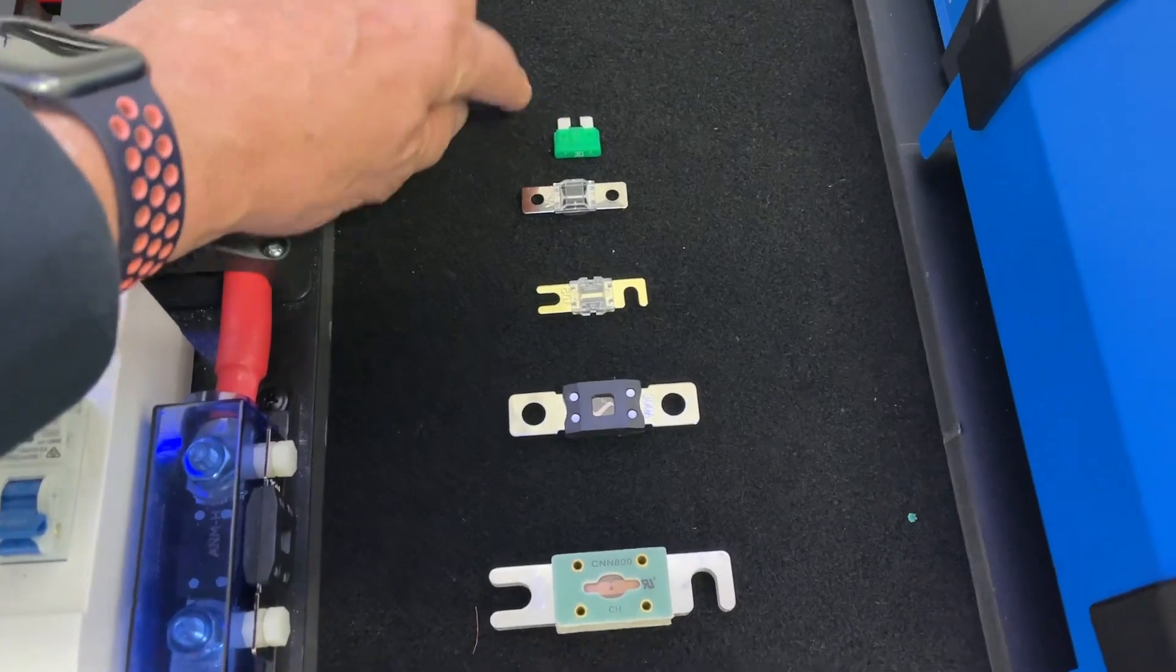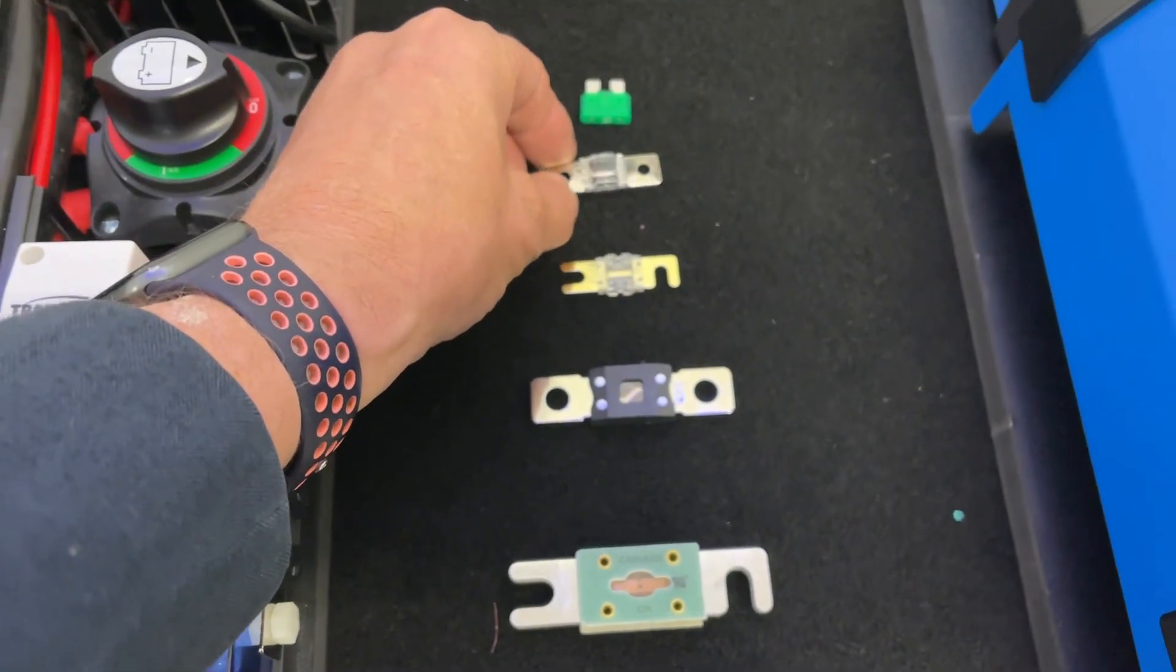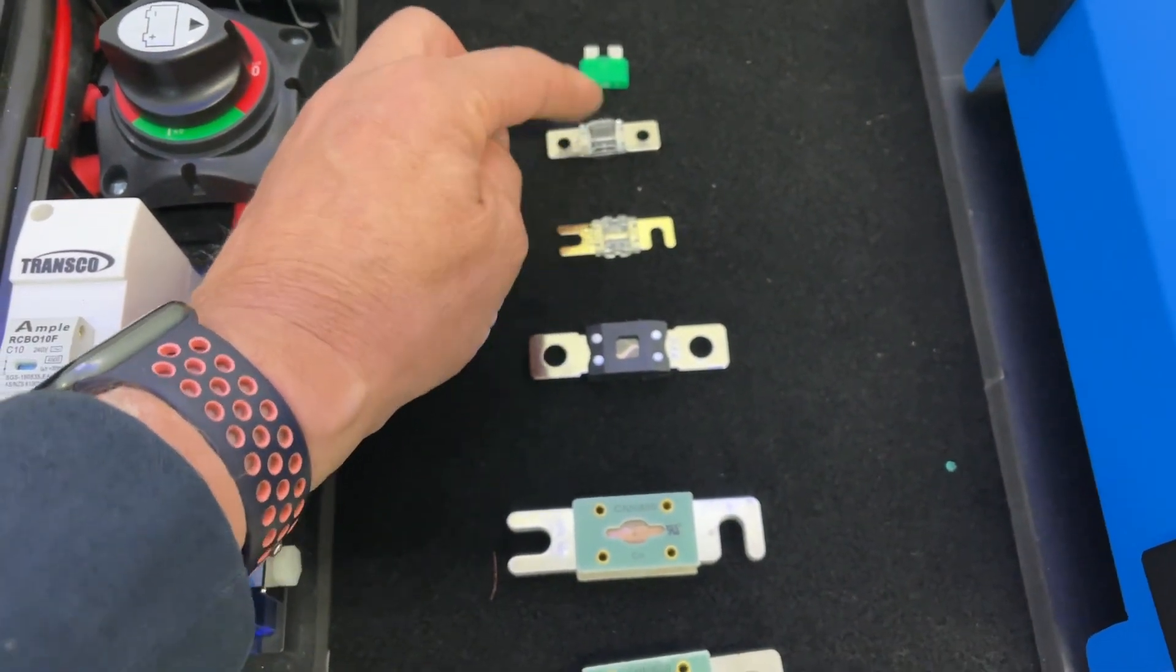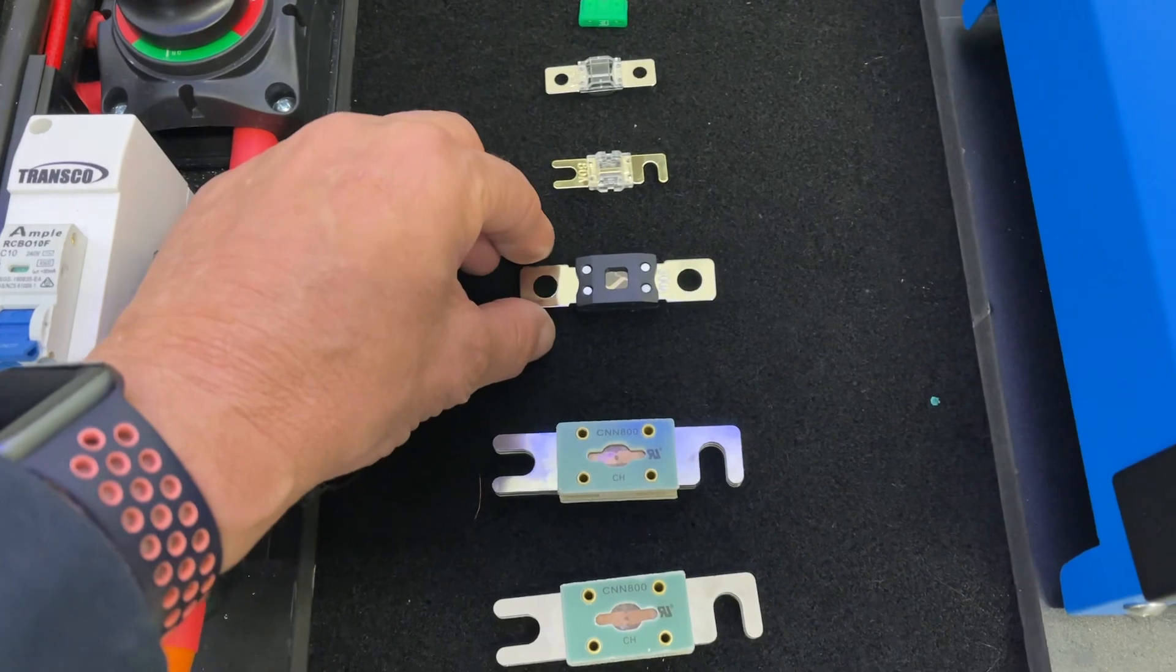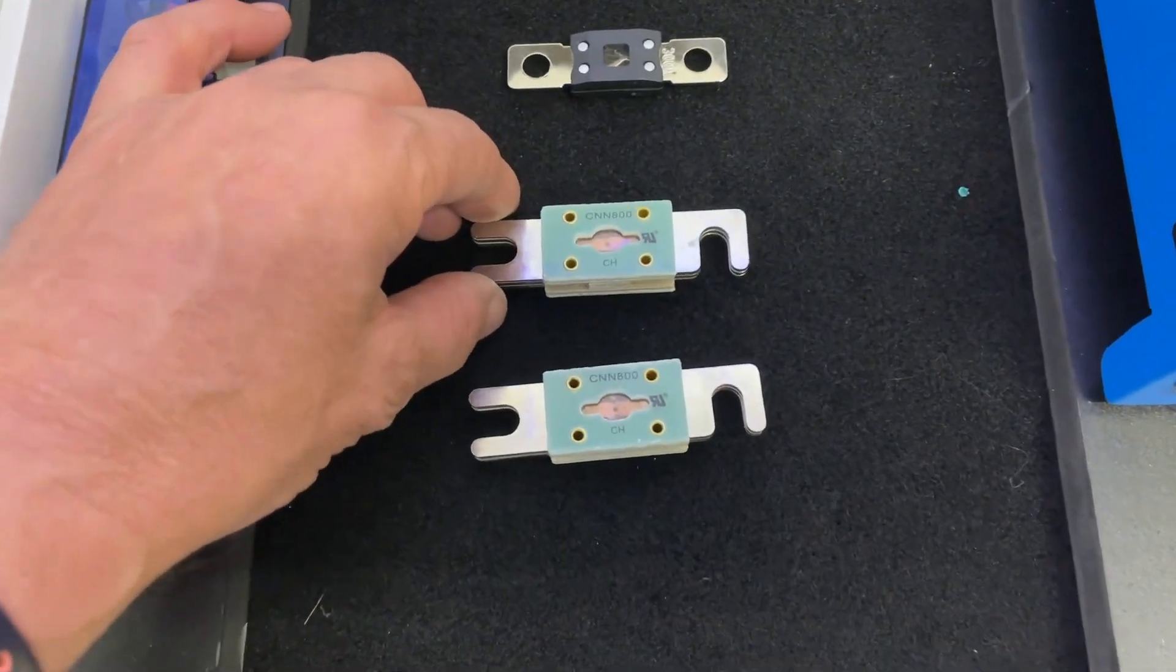At the back here, I've got an automotive standard fuse at 30 amp, then 50 amp, then 80 amp—you can see the different styles. Then I've got a mega fuse at 300 amp, and these two here are pretty special.